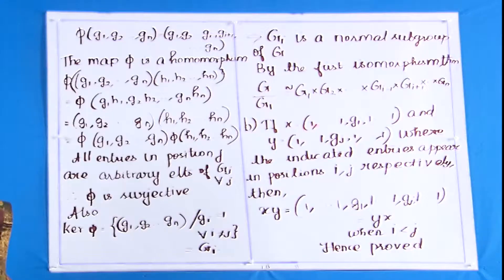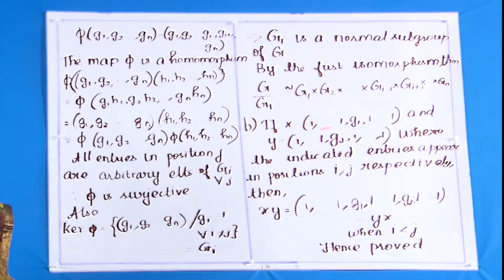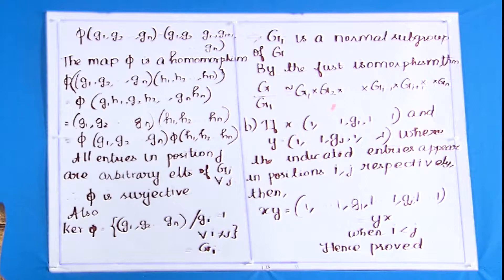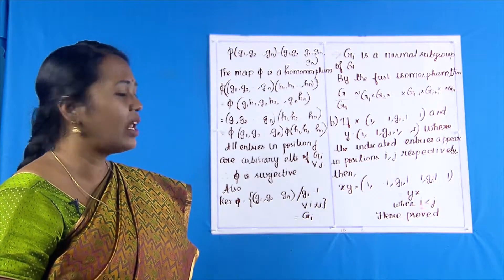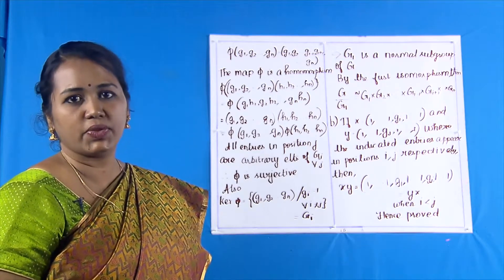For the second result, let x = (1, …, gᵢ, …, 1) with gᵢ in position i, and y = (1, …, gⱼ, …, 1) with gⱼ in position j, and 1 elsewhere. Then xy places gᵢ in position i and gⱼ in position j, and clearly interchanging them gives the same element, so xy = yx for i ≠ j. Hence the second result is proved.